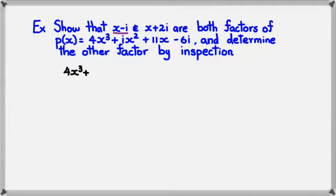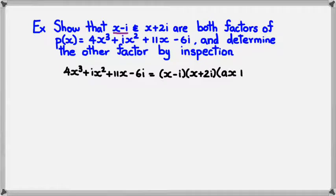So what I do know is that this is my p of x, which is the function. Now, it's x cubed. Therefore, I know that there will be three factors. The first one is already given to us, which is x minus i, and we proved it. The second one is x plus 2i, which we also checked. So the last one, we don't know what it's going to be, but we know that it's going to be ax plus b, in that format anyway.